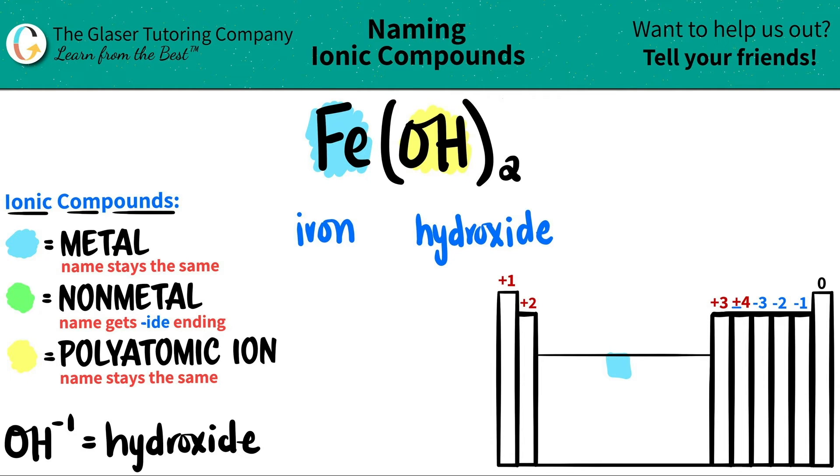But now since it's ionic, just make sure, do I need a roman numeral or not? In this case, we do because iron is part of the transitional metals. So I do need a roman numeral. And the roman numeral is always the charge of the metal.